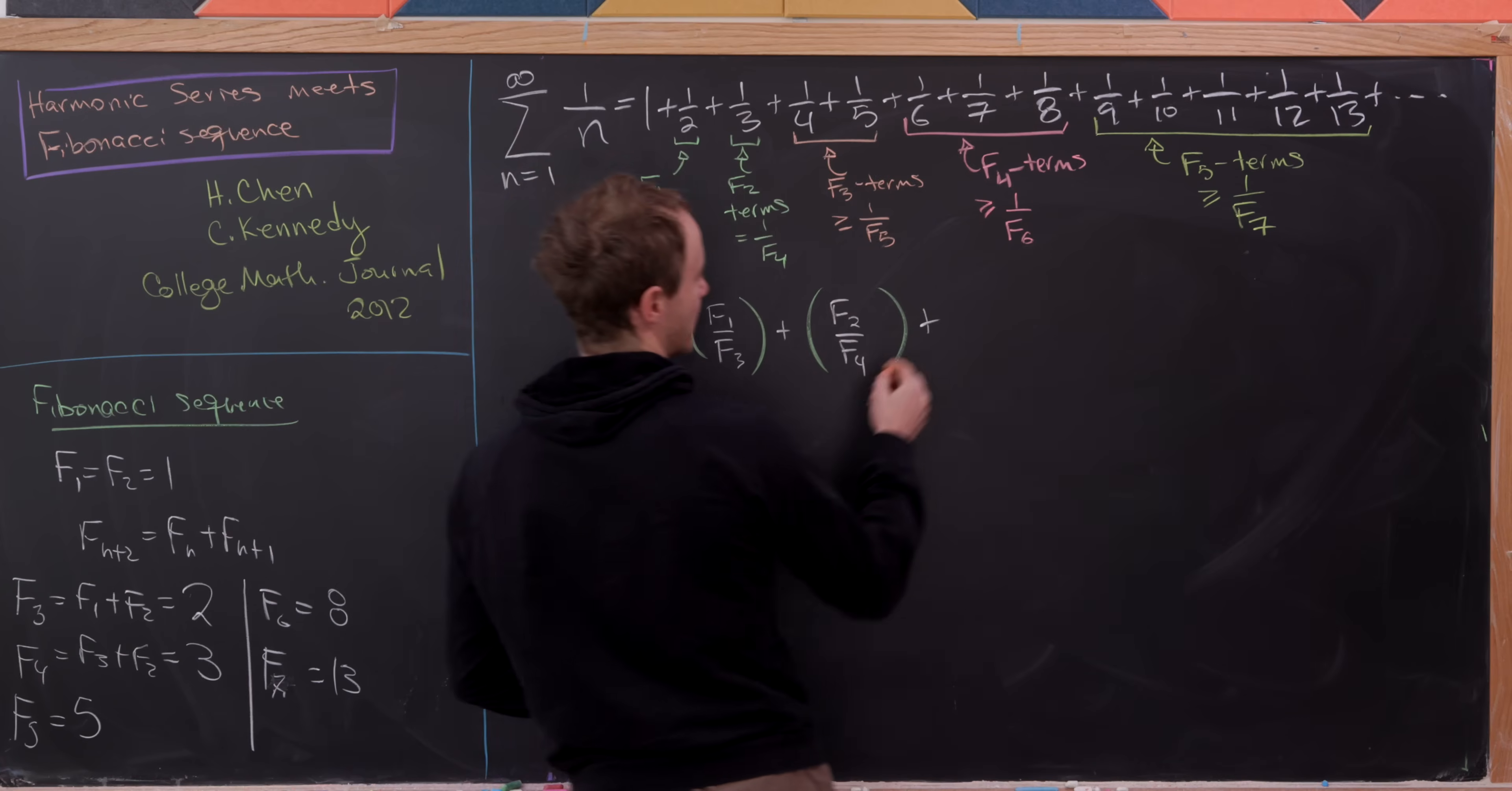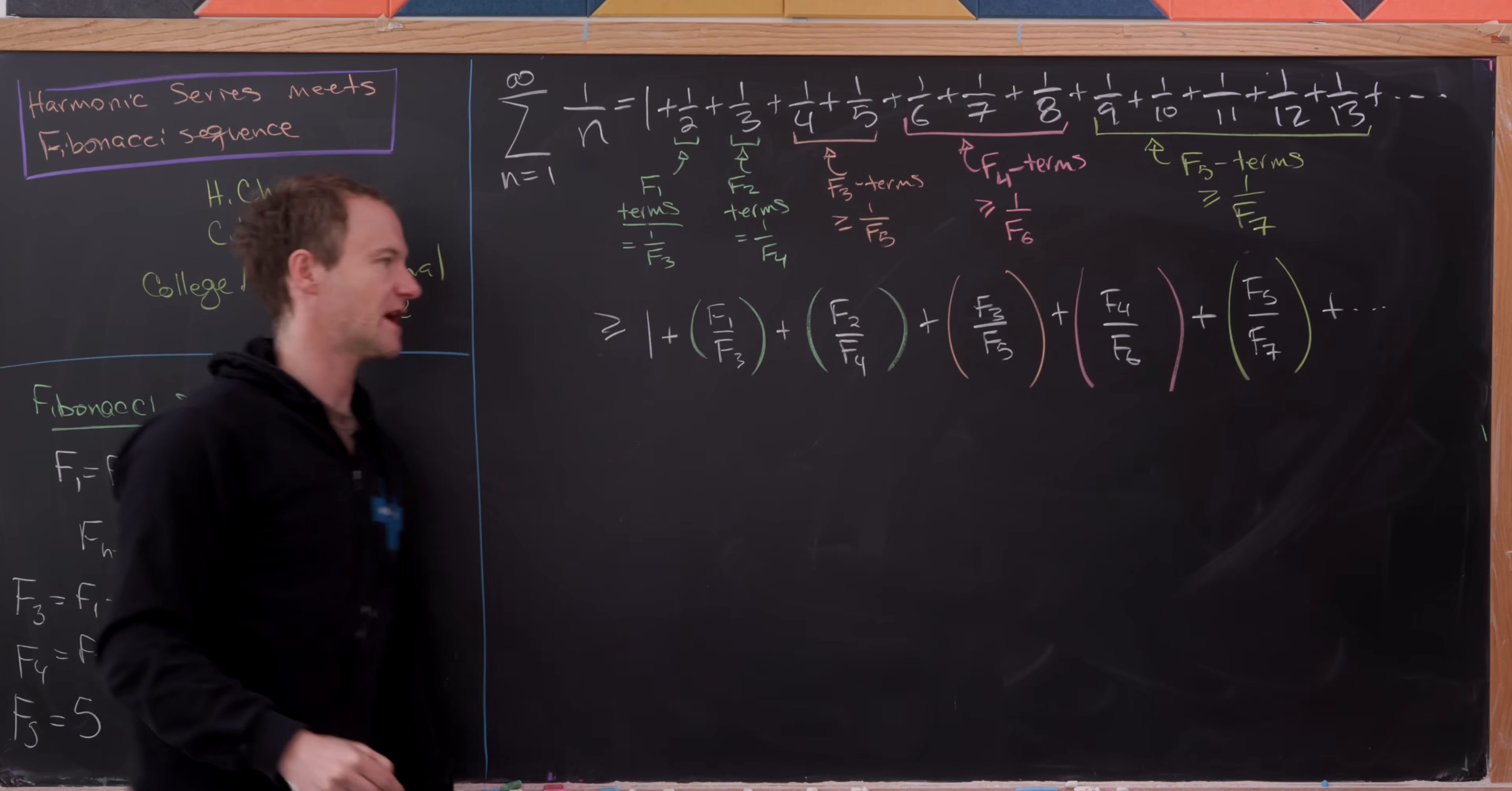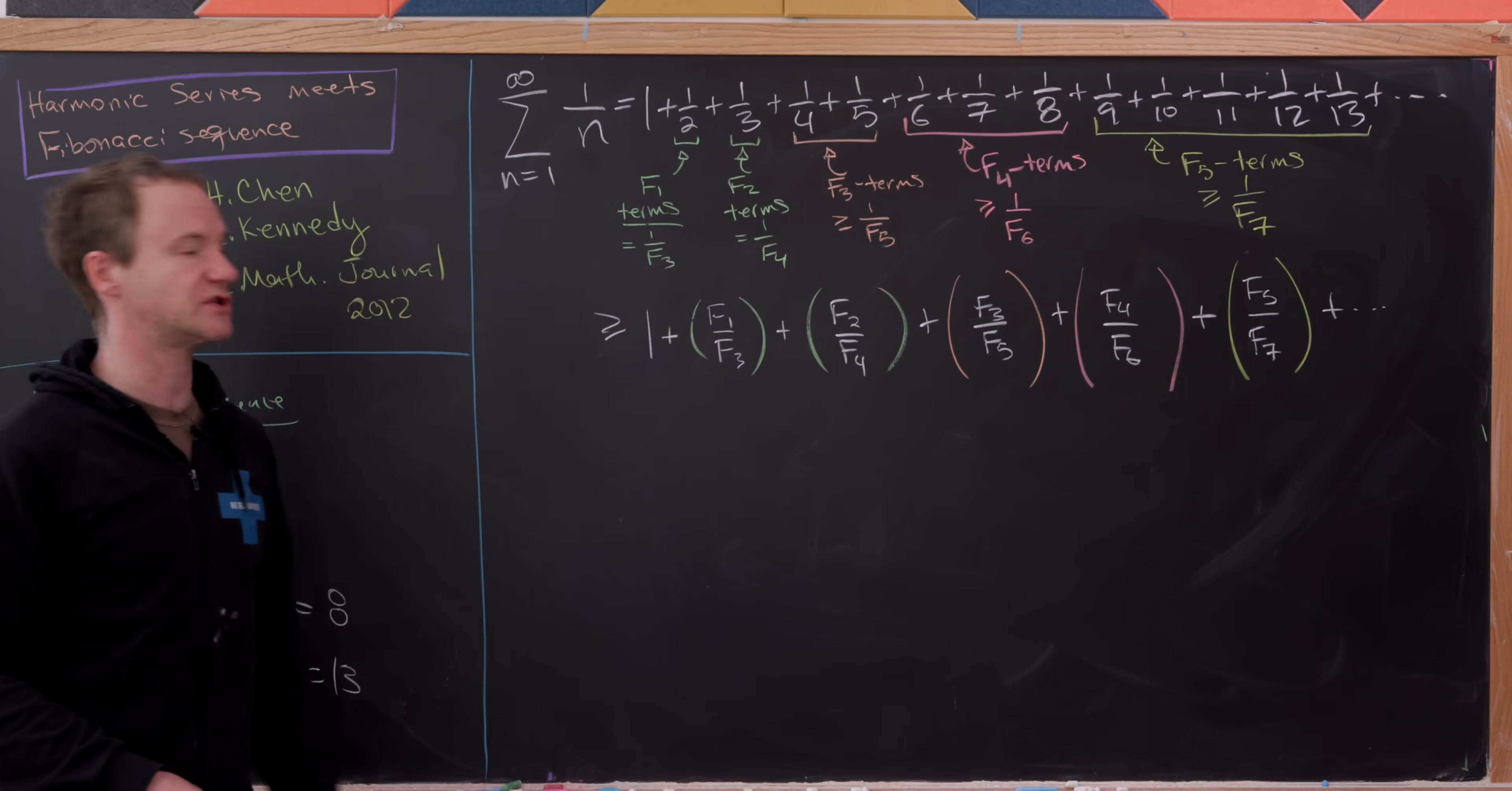And then let's see for our third block, what do we have? We're going to have F3 terms, all of them are bigger than or equal to 1 over F5. So that's going to give us F3 over F5. And then just continuing down the line, now we're going to have F4 over F6, and then F5 over F7. And that just continues on and on. But I think you can probably see the structure that's forming here. Notice in the numerator, we have a Fibonacci number. And in the denominator, we have the not the next Fibonacci number, but the one after that. So this is like F1, F1 plus 2, F2, F2 plus 2, F3, F3 plus 2, and so on and so forth.